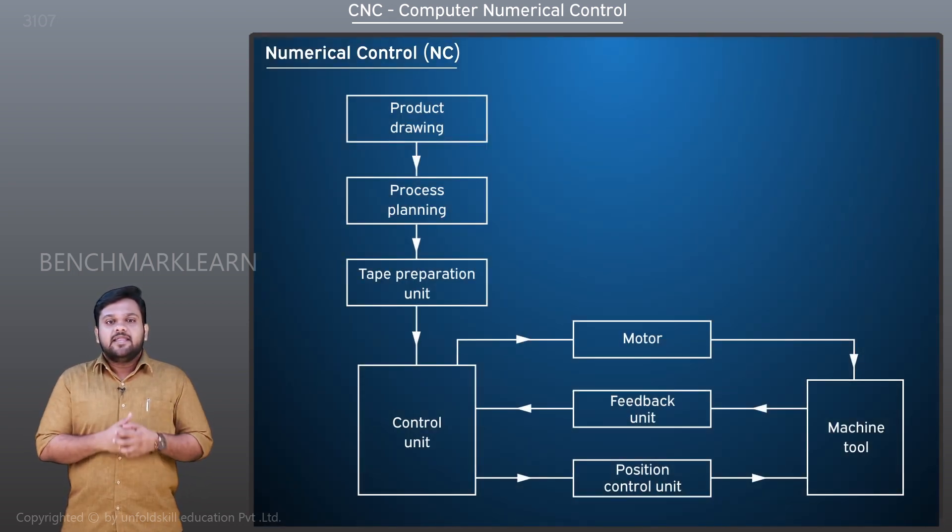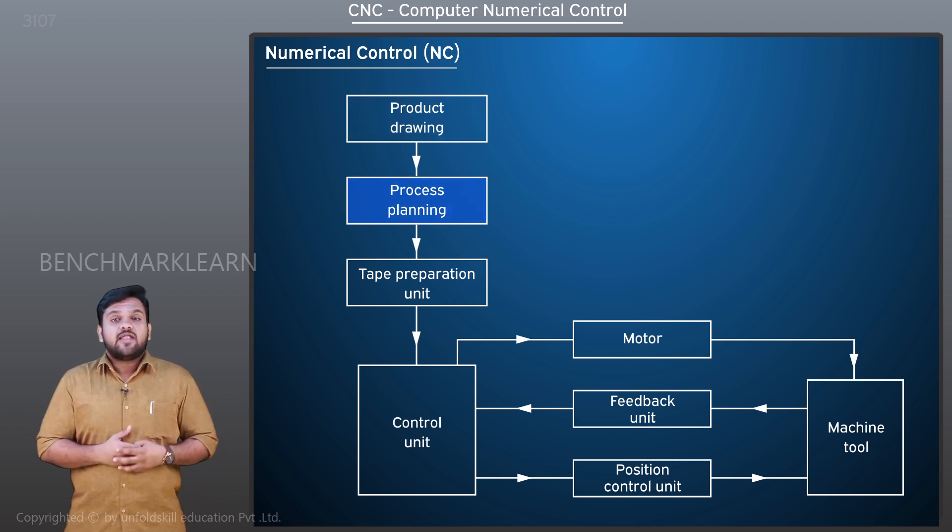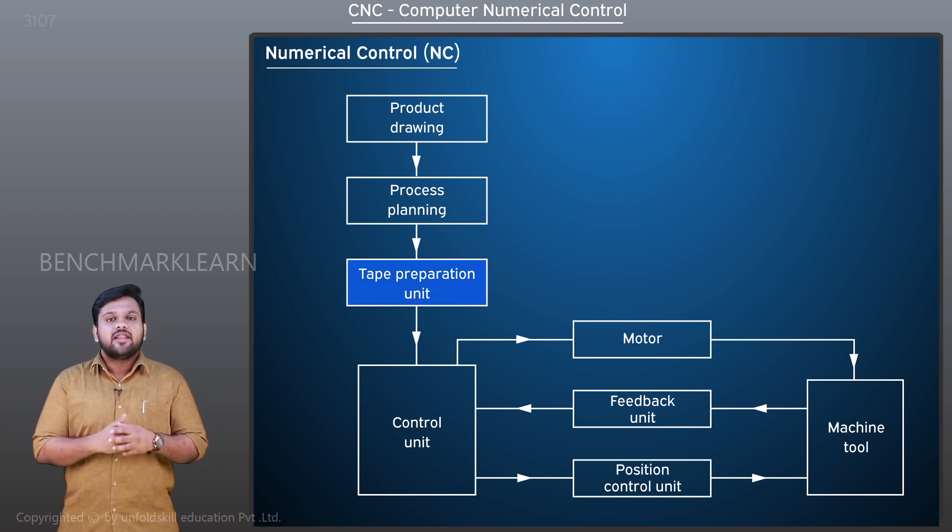In an NC system depicted here, the product drawing and process planning are finalized, then the program is prepared by a programmer. The program is coded into numerical instructions and recorded into a medium like magnetic tape or punched tape.